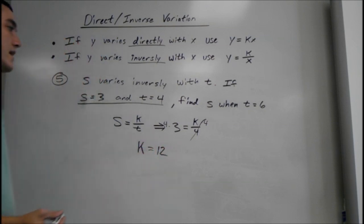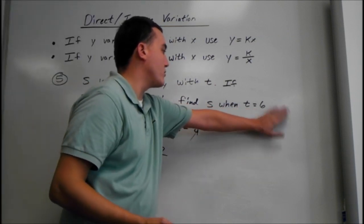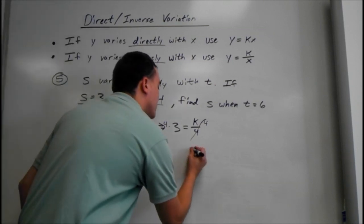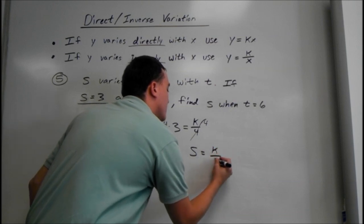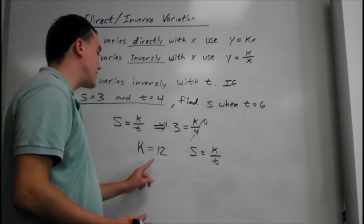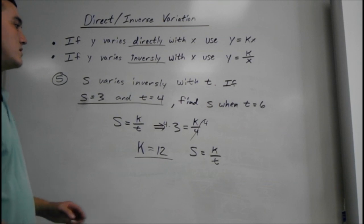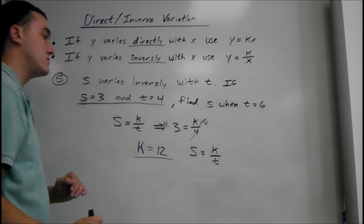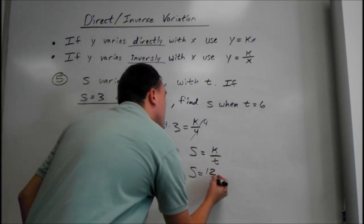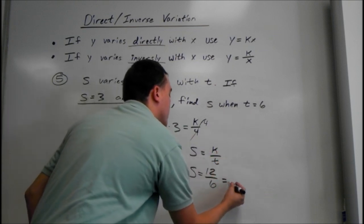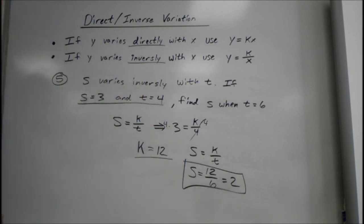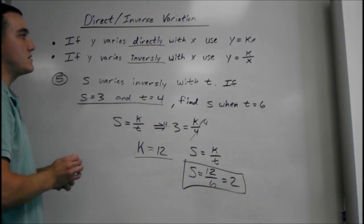But the problem didn't ask for k — it asked for s when t is 6. So we use the same equation: s equals k over t. We already know k is 12, and now t is 6. So s equals 12 over 6, which means s equals 2. And that's what it was asking for. The next video is going to be MCR Basics of Algebra.